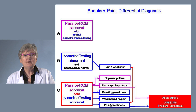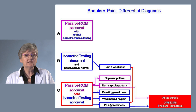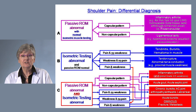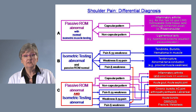Pain and weakness combined with a non-capsular pattern — acute bursitis can cause this, but the ominous consideration here is fractal metastasis. That combination — non-capsular restriction of motion with pain and weakness — always warrants further investigation. Putting all of this together, the shoulder pain differential diagnosis can be sorted into the three diagnostic categories by separating passive range, isometric muscle testing, and their combination.